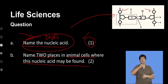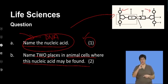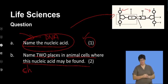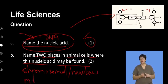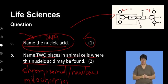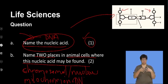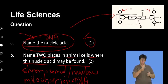Name two places in animal cells where this nucleic acid may be found. Firstly, DNA is found in the nucleus — we refer to that as nuclear DNA or chromosomal DNA. DNA can also be found in the mitochondrion, the organelle that controls cellular respiration. DNA is found there and is linked to providing instructions for producing important enzymes and controlling how the mitochondria function.